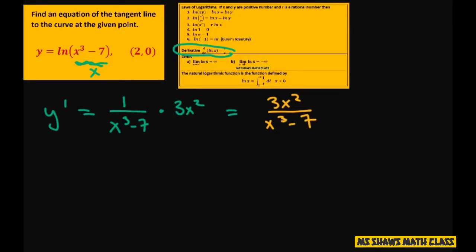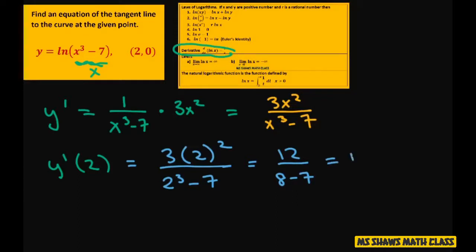Now we're going to evaluate y prime at 2. So that's going to equal, and you just plug in your 2, divide it by 2 cubed minus 7. So this is going to be 4 times 3 is 12, and 8 minus 7 is 1, so that's just going to equal 12. So 12 is your gradient.